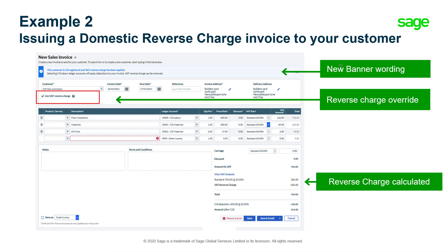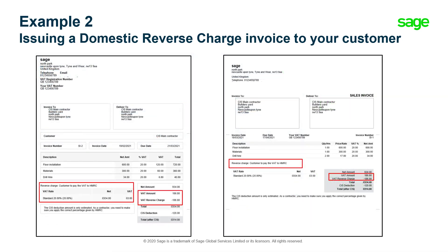Do bear in mind that once the tick box is selected to apply domestic reverse charge to the invoice, it will apply to the entire invoice. Within sales, domestic reverse charge can also be applied to quotes and estimates, and this will carry over into the invoice once they are converted. When it comes to printing or emailing these invoices, our layouts have been configured to display the reverse charge value whilst not adding it to the total, and they will also contain the correct domestic reverse charge wording.